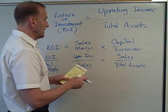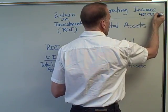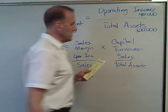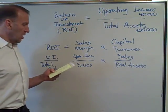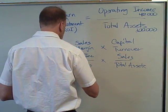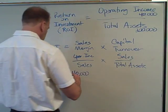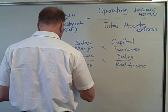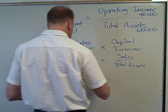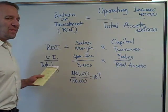Sticking with the same numbers — our operating income was forty thousand and our total assets were two hundred thousand — let's now say that our sales are four hundred thousand. Calculating the sales margin: operating income of forty thousand divided by sales of four hundred thousand gives us ten percent.